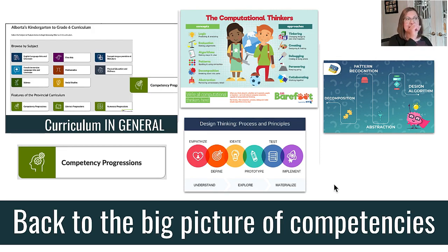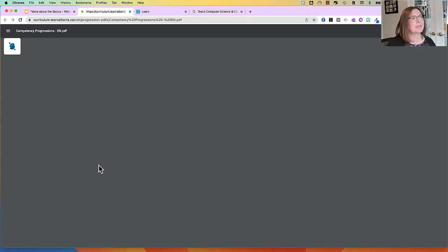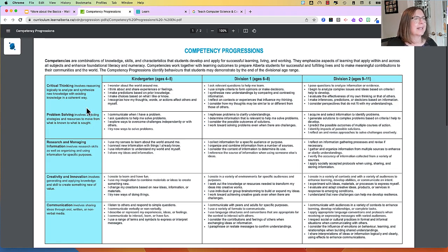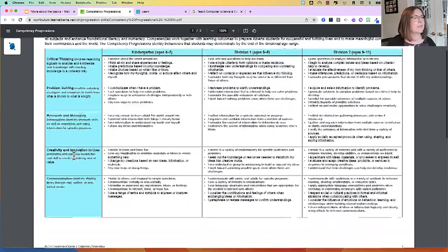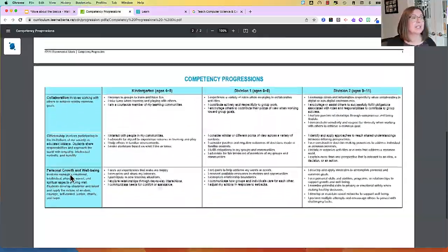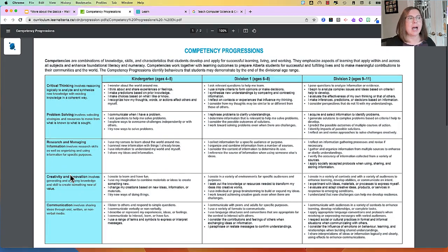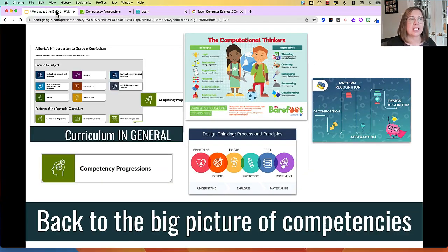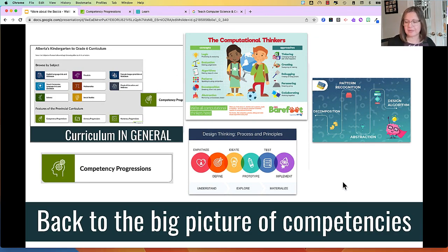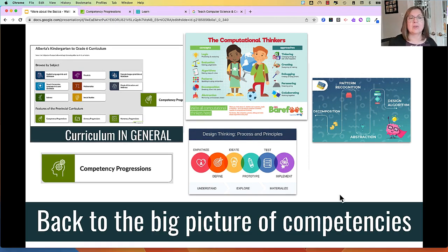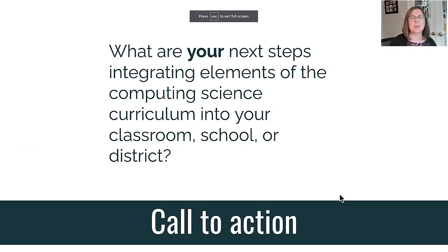Last but not least, I want to look at the competencies. If I click into the competency progressions, think about the kinds of ideas we've looked at today: critical thinking, problem solving, researching and managing information, creativity and innovation, communication, collaboration, citizenship, and personal growth and well-being. How many of these do you see as being able to be checked off through the use of computational thinking and design thinking and creativity? Most of them, if not all of them, would be checked off — and we haven't even clicked into the literacy progressions or the numeracy progressions. It's really a huge piece within the curriculum.